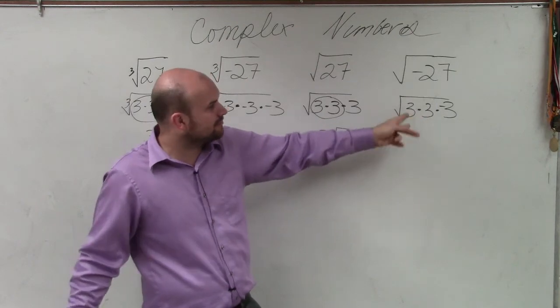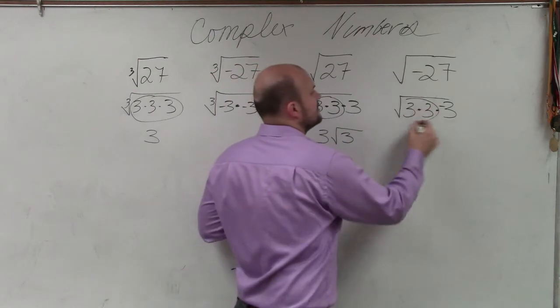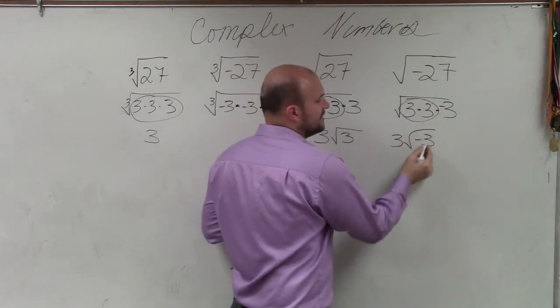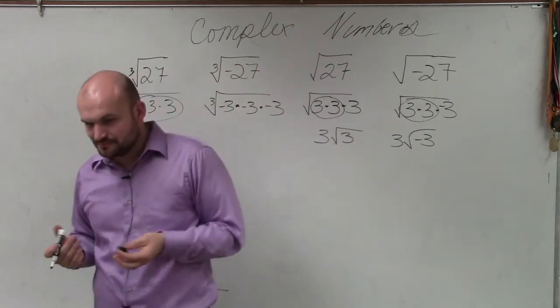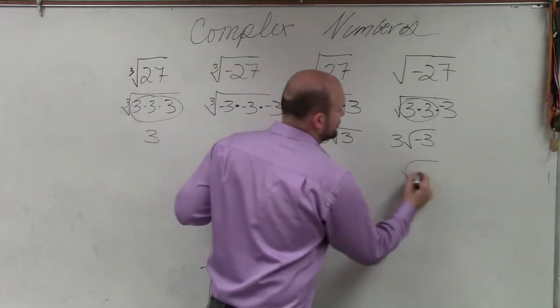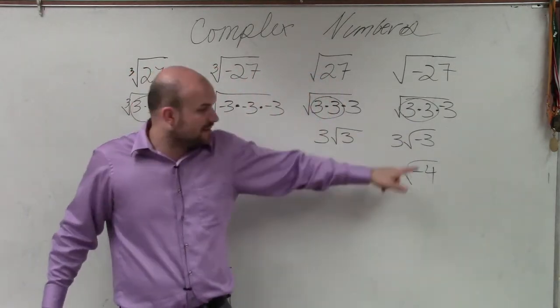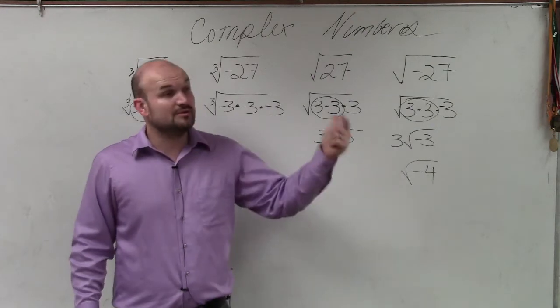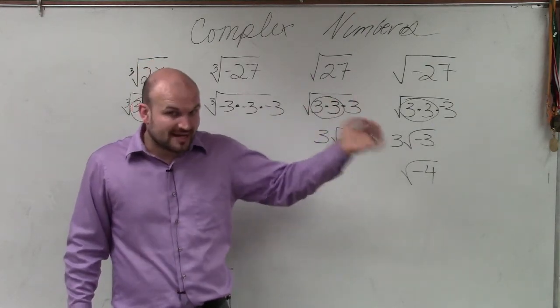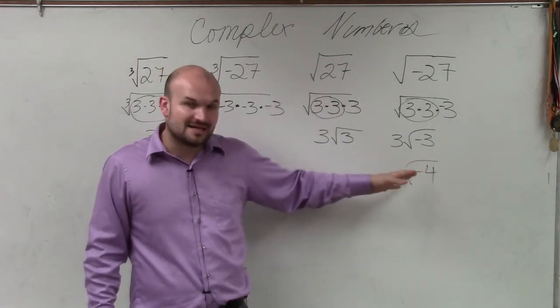No two numbers multiply to give you negative 27. I can only take out the even root of 3, so it'd be 3 square root of negative 3. But we can't take the square root of a negative number. Let's do negative 4 as an example. There's no two numbers that are exactly the same that multiply to give you negative 4. It's either 2 and 2 or negative 2 and negative 2, but both give you positive 4. So this is impossible.